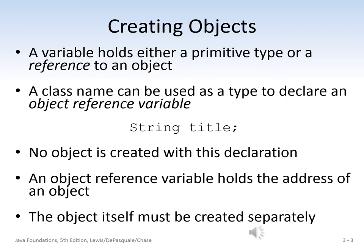A variable holds either a primitive data type or a reference to an object. We can use a class name such as String as a type to declare an object reference variable. This does not create an object — it declares an object reference variable. An object reference variable holds the address of an object. However, the object must be created using the class constructor, which we will cover next.